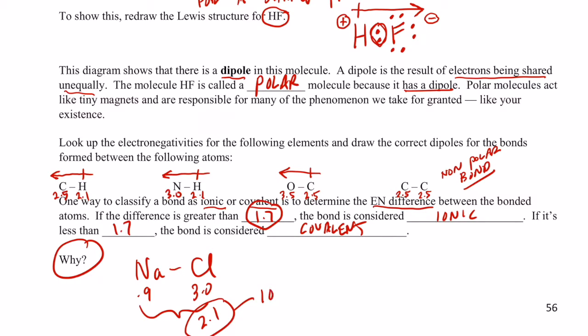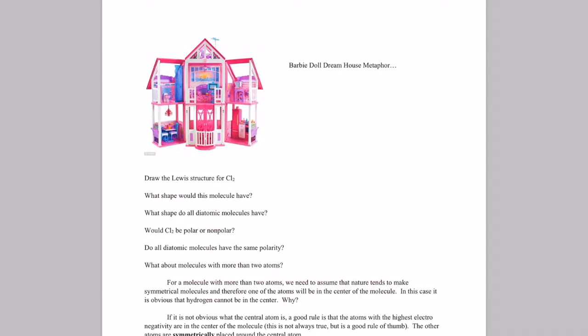This would be an ionic bond because the electrons that are being shared, which they're really not in this case, spend almost all of their time around the more electronegative element. They are transferred to the chlorine atom in this case. Sodium loses it, chlorine gains it. So when that difference becomes higher than 1.7, we call that an ionic bond. If it's lower than 1.7, we call it covalent because they're sharing more than they are transferring.